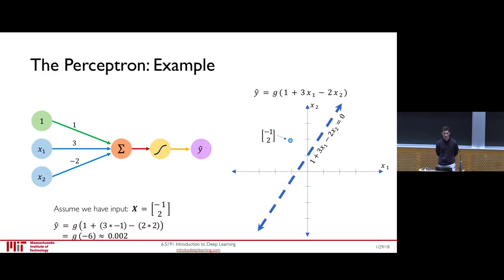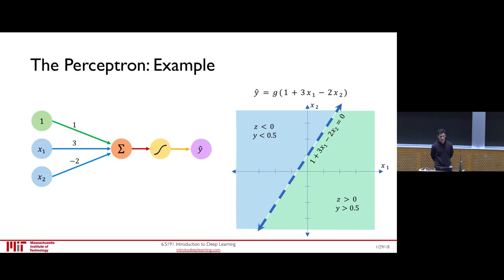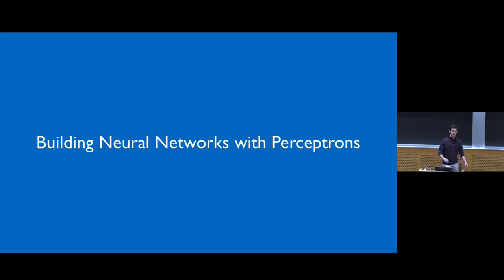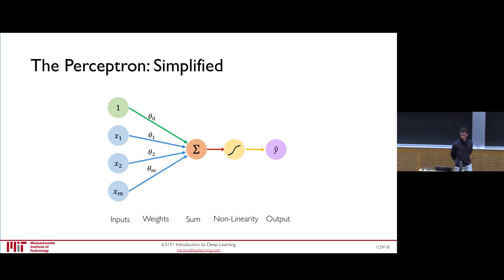Given a new point at negative 1 and 2 in feature space, depending on which side of the decision boundary it falls on, we automatically determine whether the output is less than or greater than zero. With the sigmoid function, this corresponds to outputs greater than or less than 0.5. Now that we understand what a perceptron is, let's see how we can compose these perceptrons together to build neural networks.